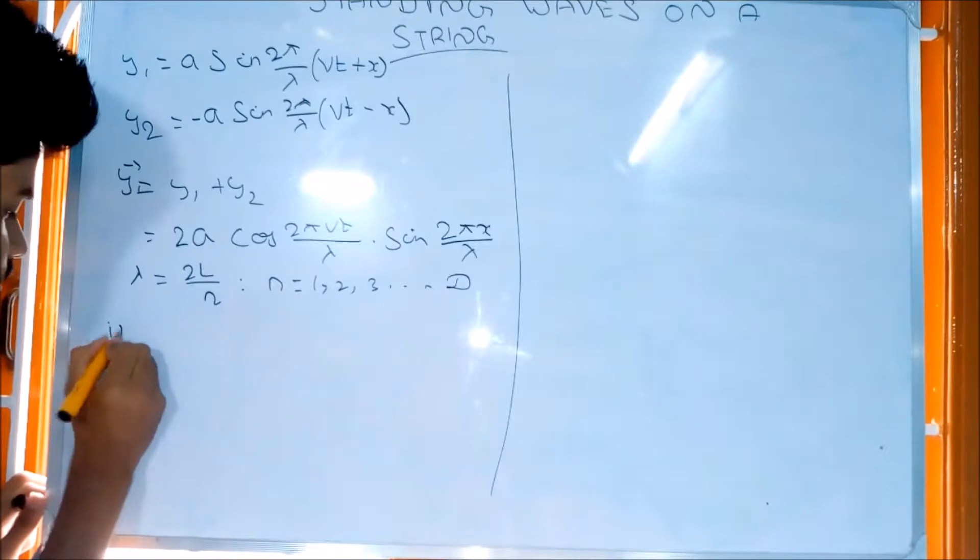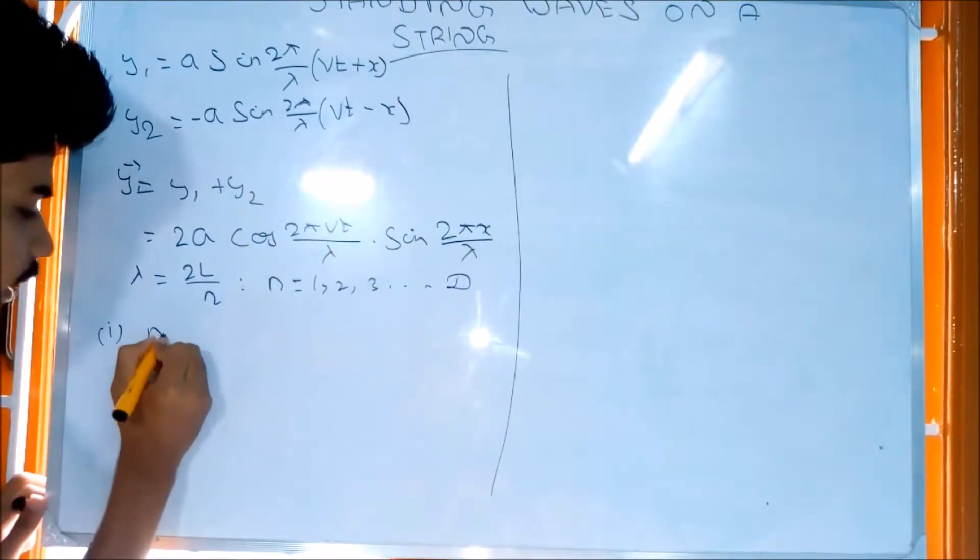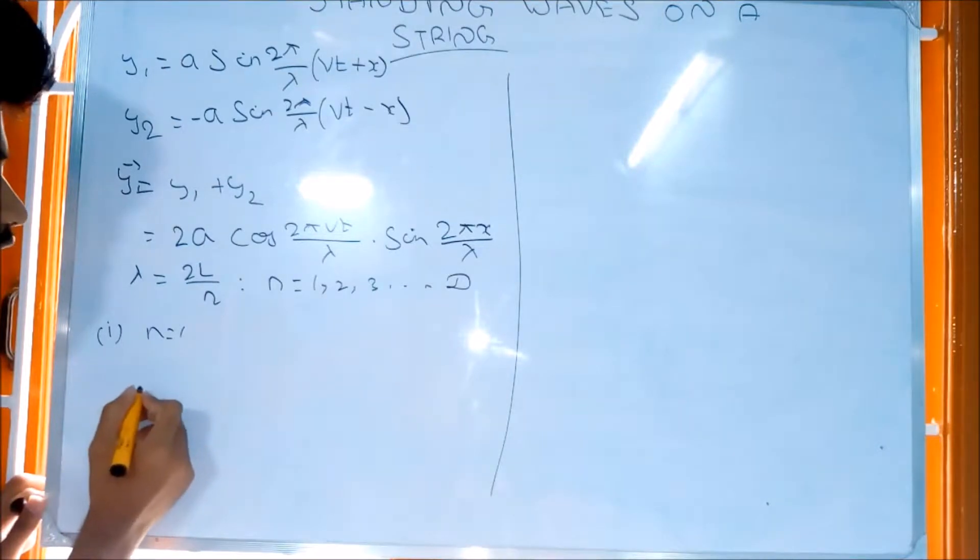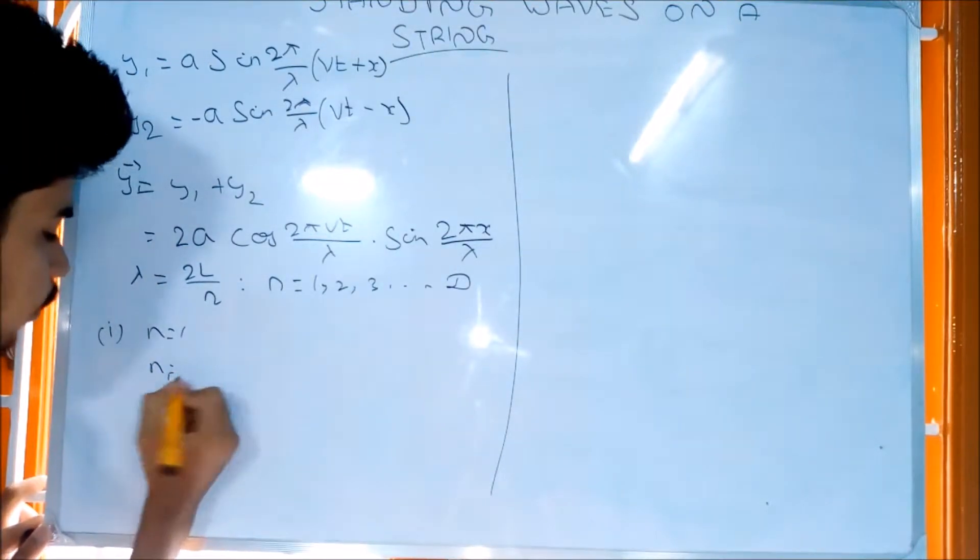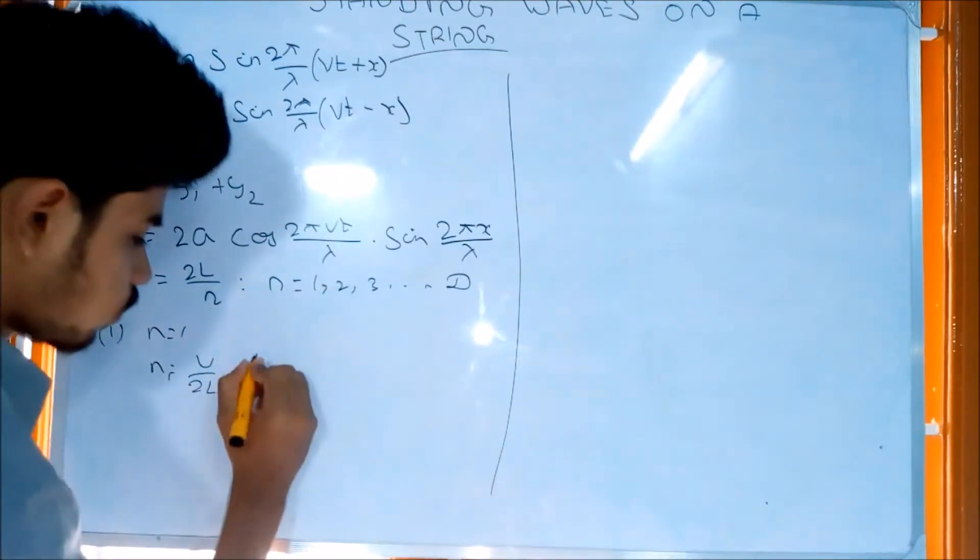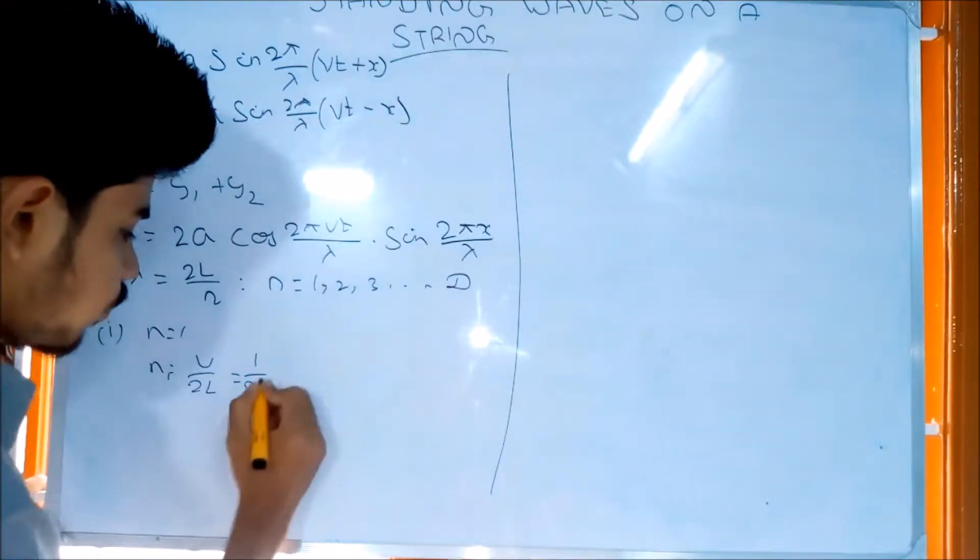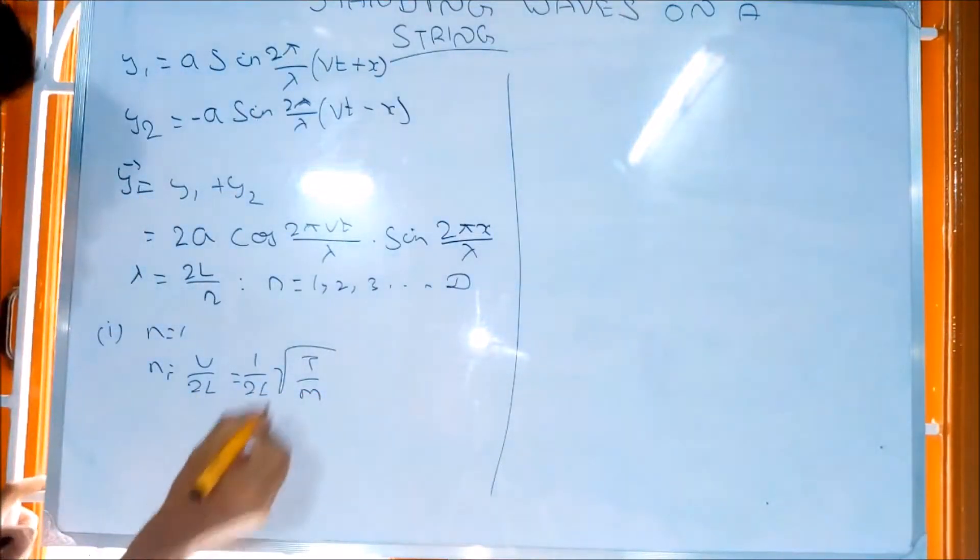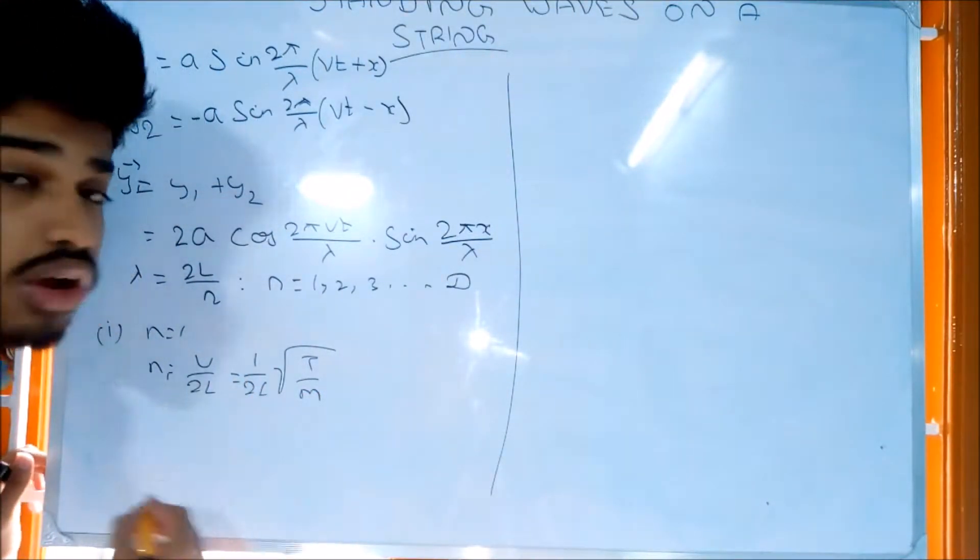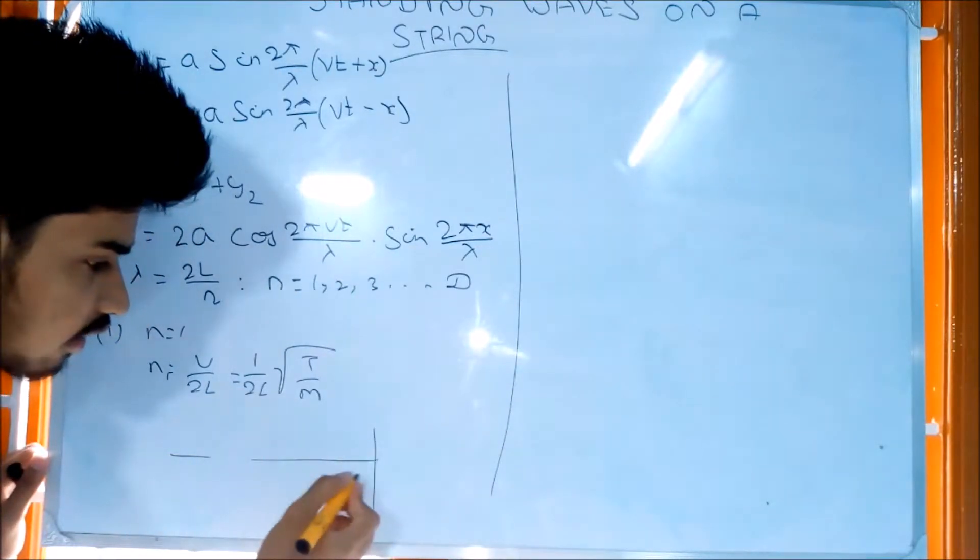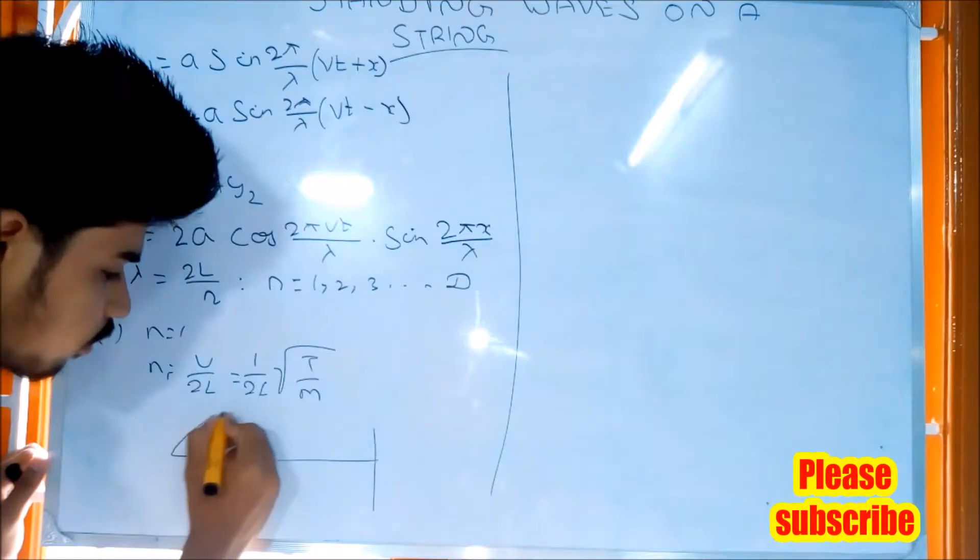For the first mode, n equals 1, so n1 equals v/2L. The wave velocity v equals the square root of T/m, where T is tension and m is mass per unit length. This is the first harmonic wave on the string.